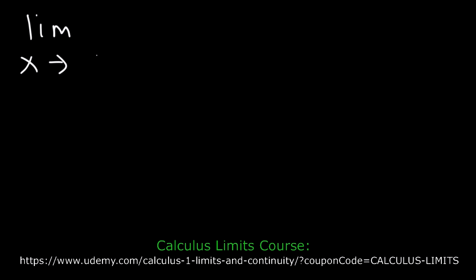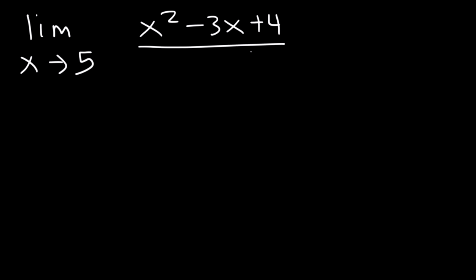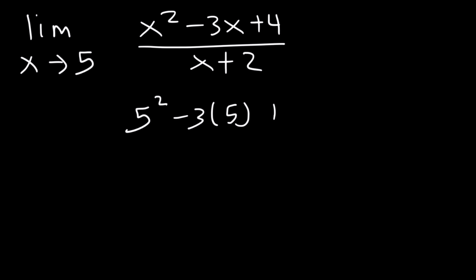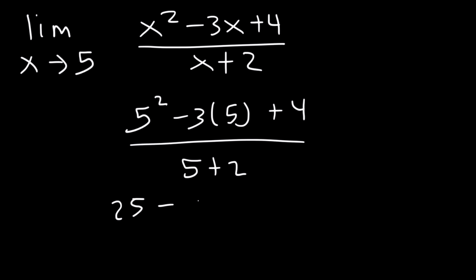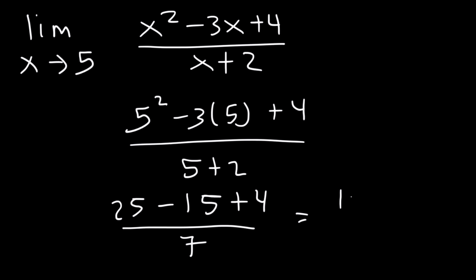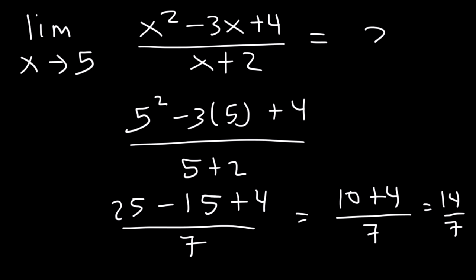As you can see, direct substitution is a nice technique. Let's try another example: the limit as x approaches 5 of the rational function x squared minus 3x plus 4 divided by x plus 2. Using direct substitution: 5 squared minus 3 times 5 plus 4 divided by 5 plus 2 gives us 25 minus 15 plus 4 over 7, which is 14 divided by 7, equal to 2.